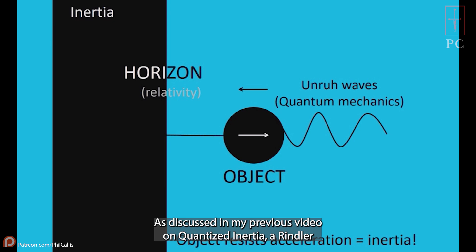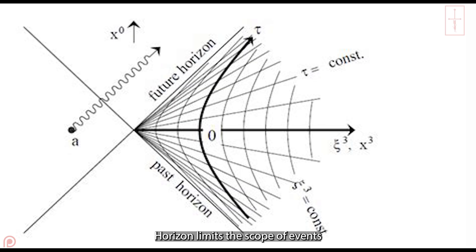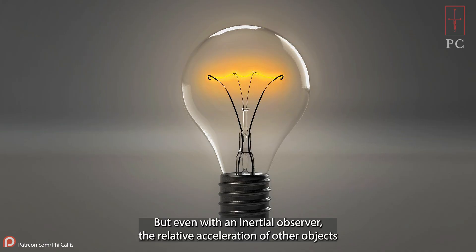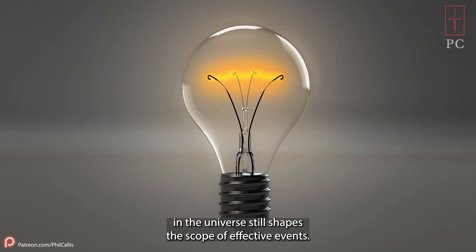As discussed in my previous video on quantized inertia, a Rindler horizon limits the scope of events that could have affected a uniformly accelerating observer. But even with an inertial observer, the relative acceleration of other objects and universe still shapes the scope of effective events.